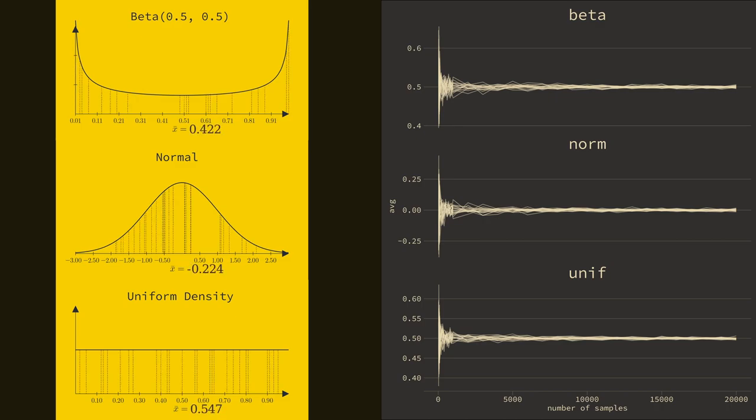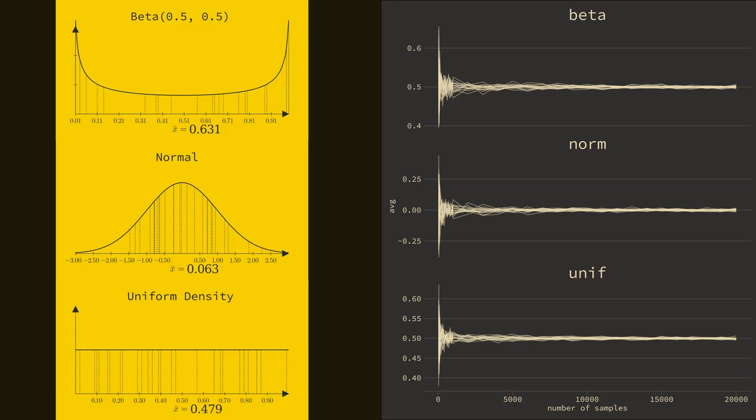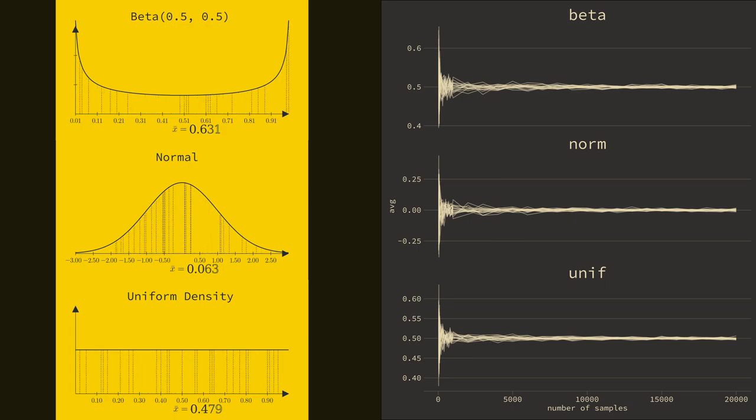All the convergence plots look very similar. They start wide, then taper down as the number of samples increase. What I think is wild is that the distributions I pulled from to generate these plots look very different. This phenomenon is known as the central limit theorem.